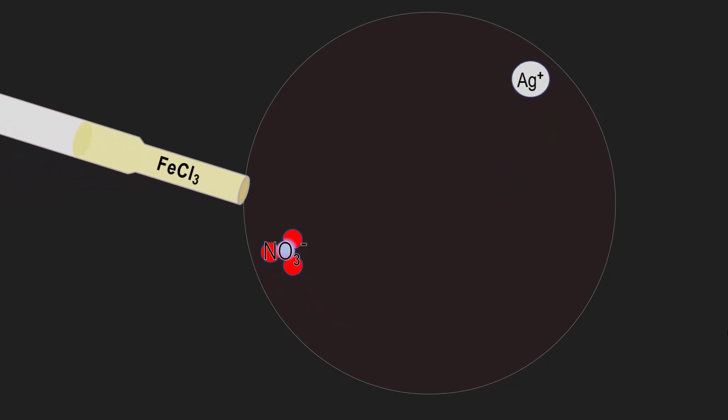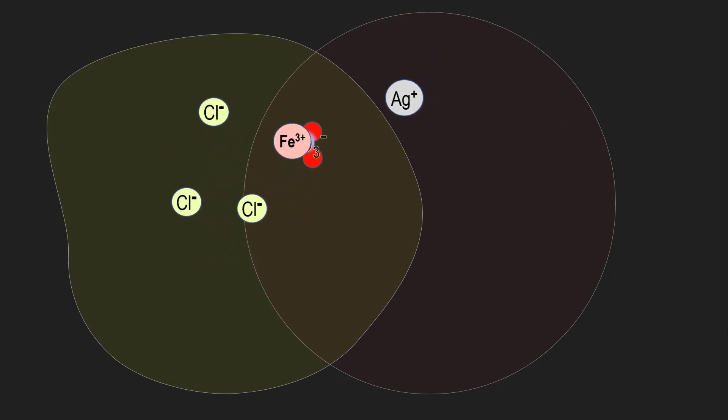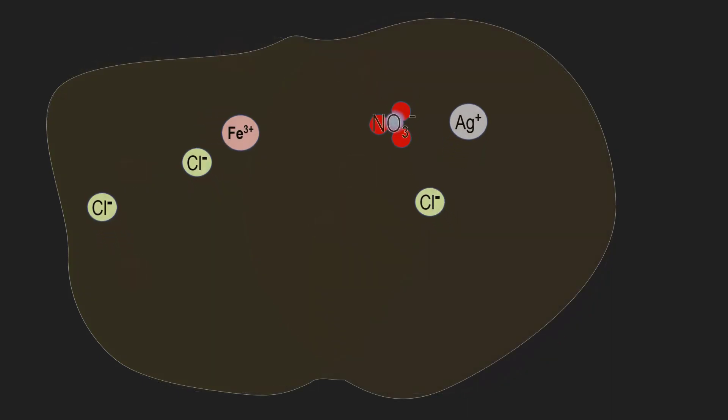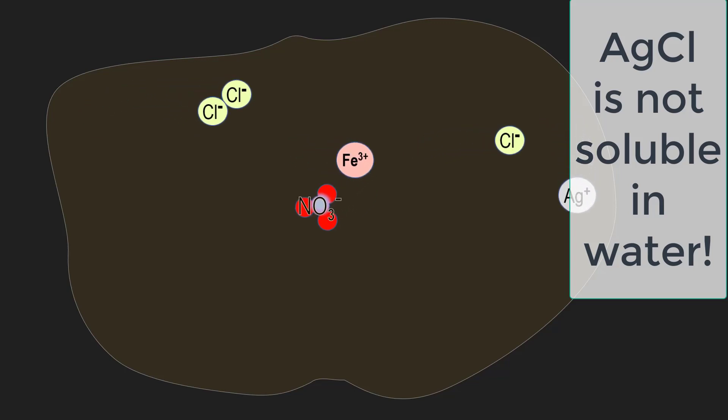The added FeCl3 solution actually adds two more types of ions: aqueous iron ions and aqueous chloride ions. The most interesting part about this is that the compound AgCl, silver chloride, does not dissolve in water. It is insoluble.